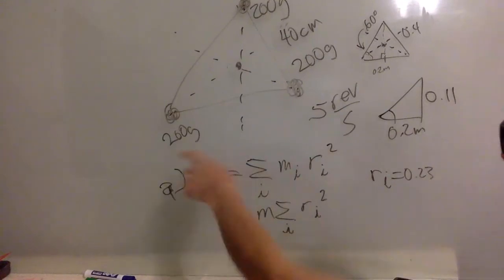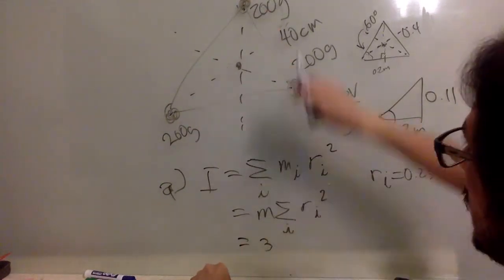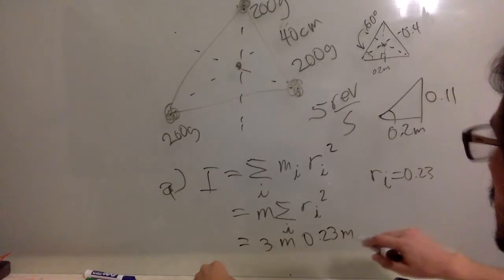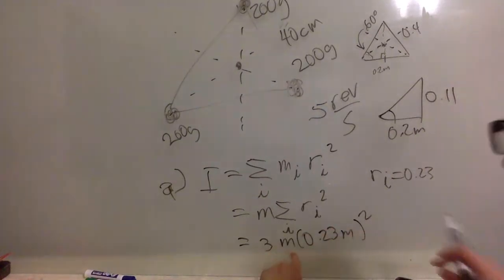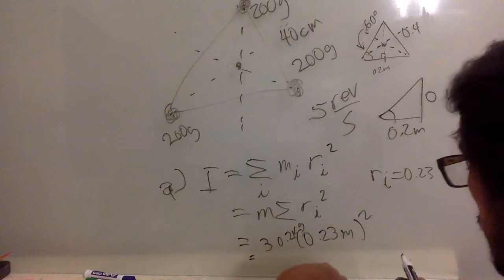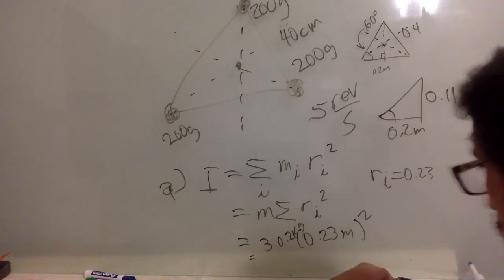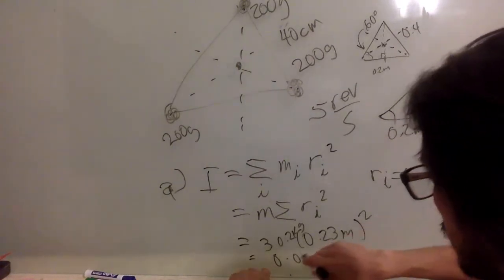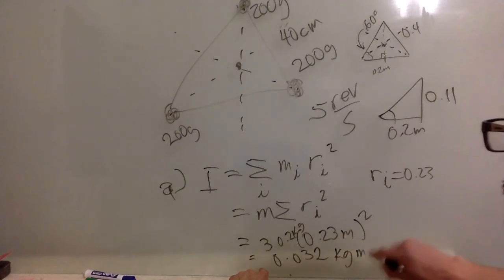Okay, so the mass is the same for all of them. So then this is just three times, because you have three of these, and the distance is the same for all of them. The mass times 0.23 meters squared, and the mass is 0.2 kilograms.